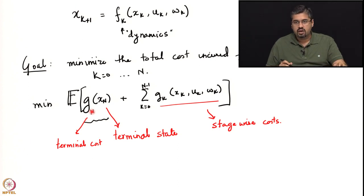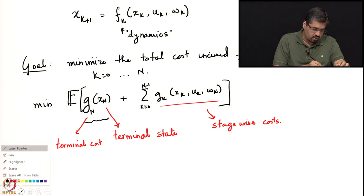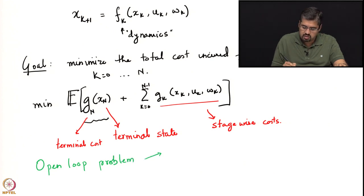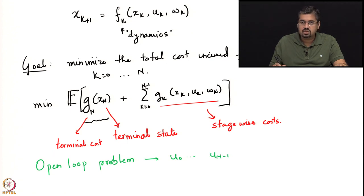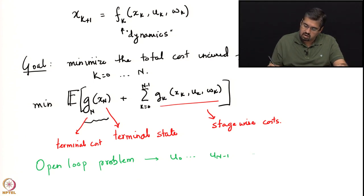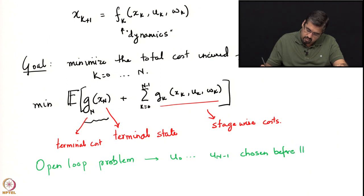Since we are taking decisions in a sequence, we can consider two different types of decision problems. The first kind is called an open loop problem. In an open loop problem, we choose decisions u_0 to u_{N-1} without any knowledge about the system — it is as good as having chosen these actions even before the system begins to evolve.